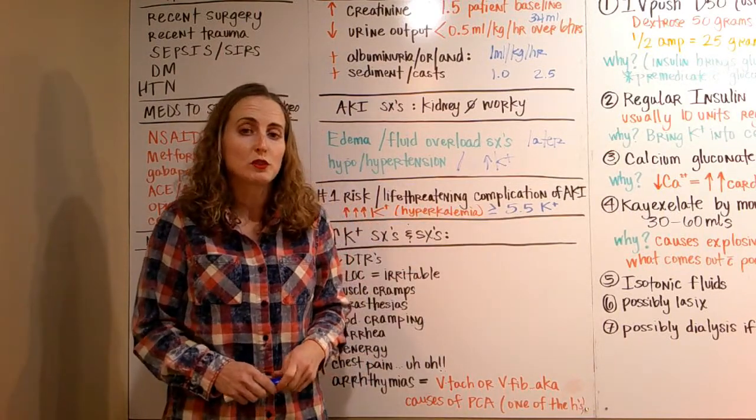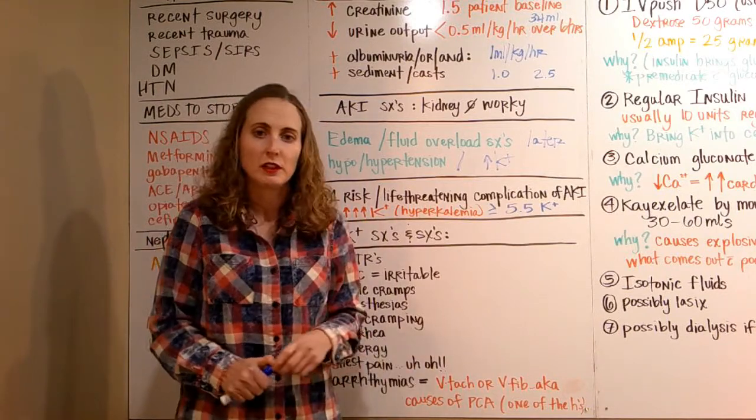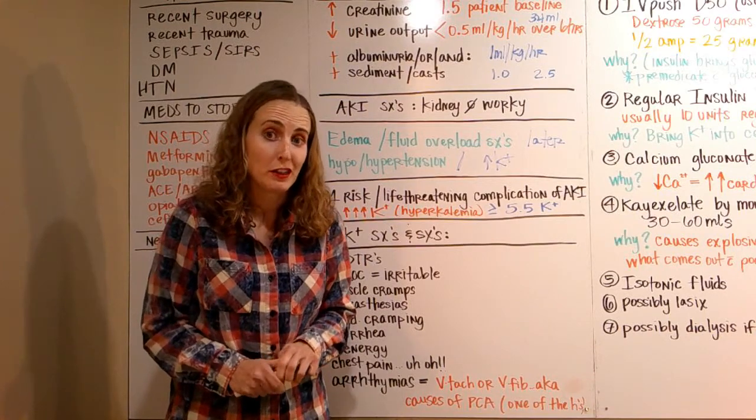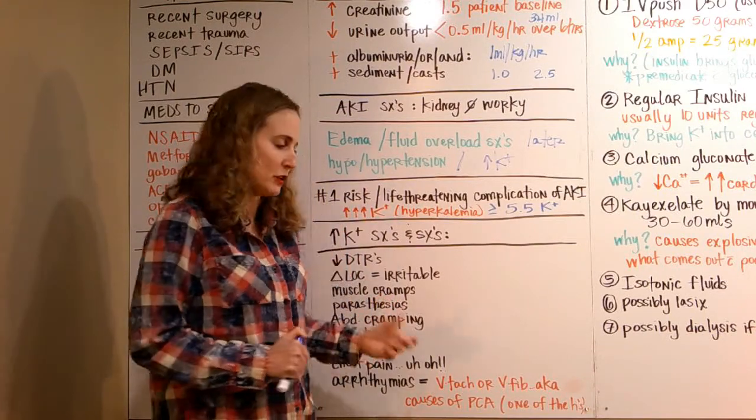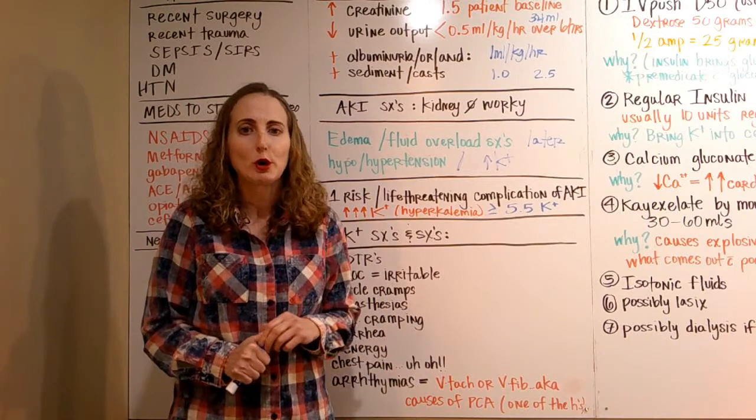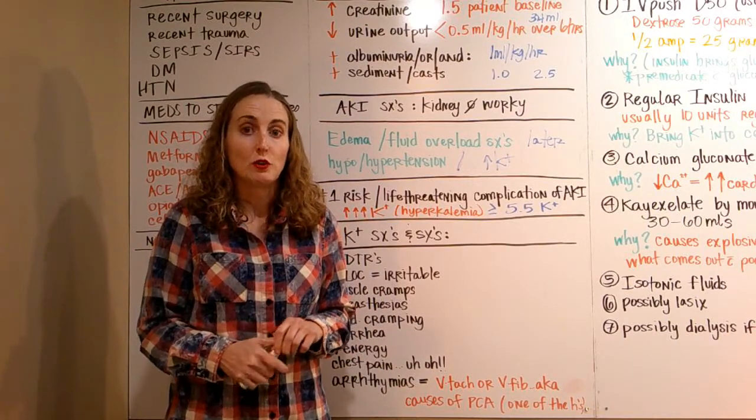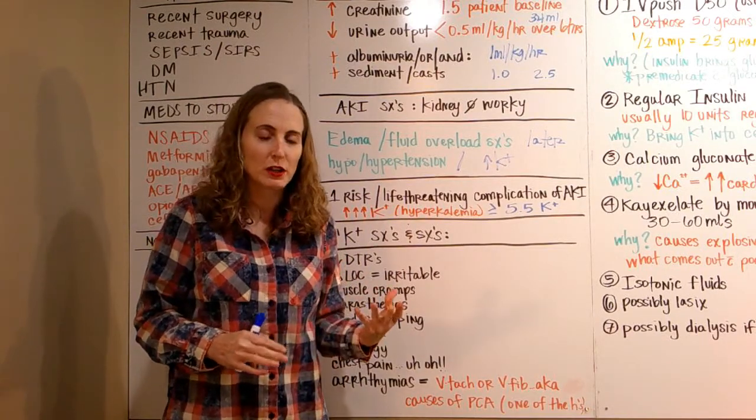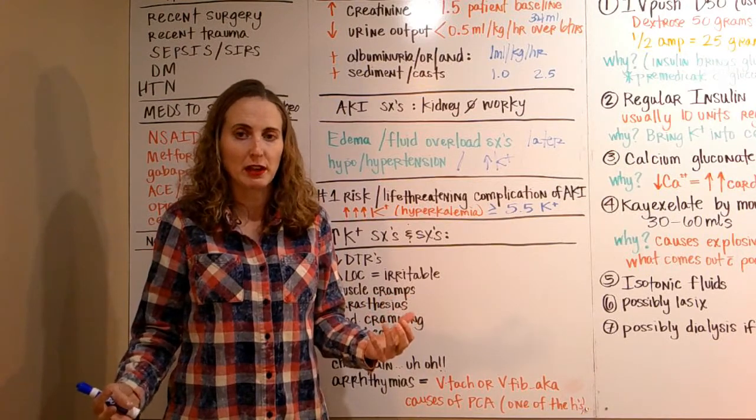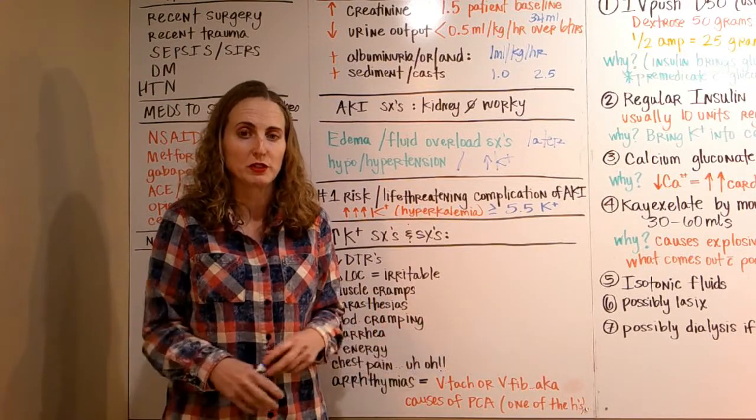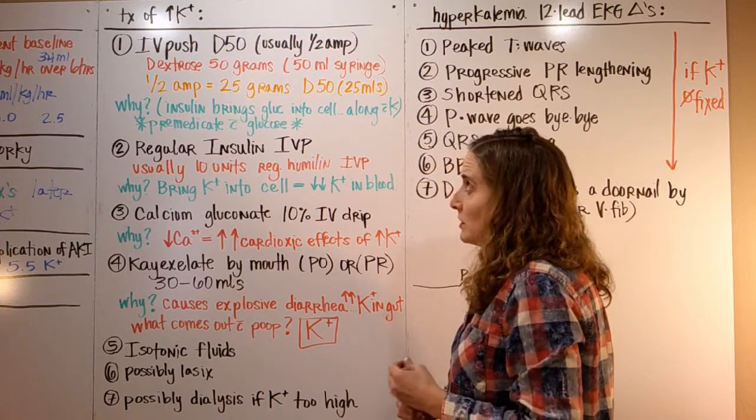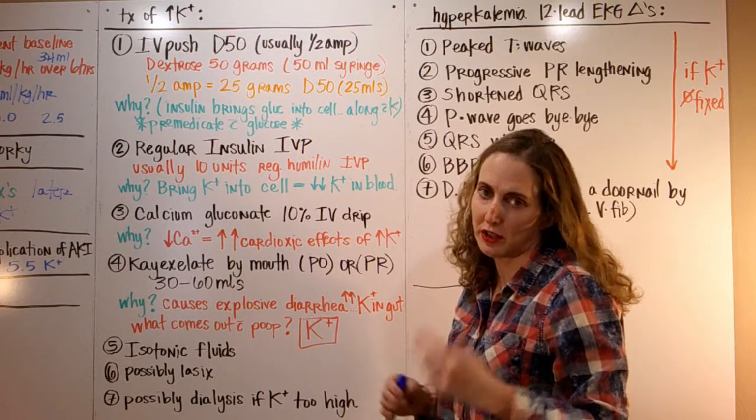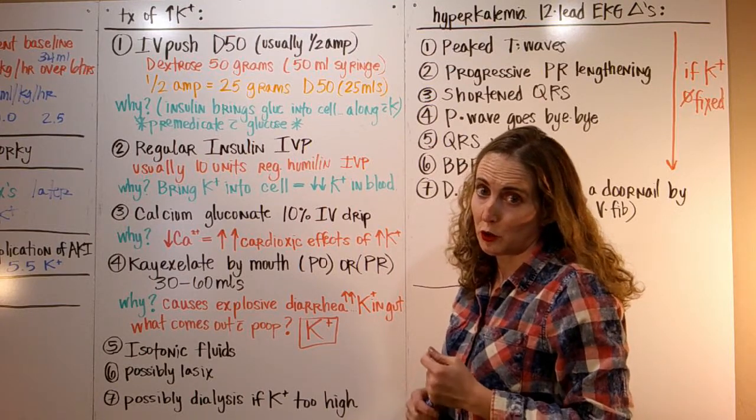This leads to arrhythmias if you don't take care of that high potassium. If you remember back from megacode week, we had to think about the causes of pulseless cardiac arrest and they all start with H or T. Well, here's one of the H's: hyperkalemia. We've completed the circuit and connected megacode over to hyperkalemia, because hyperkalemia eventually will cause pulseless cardiac arrest.